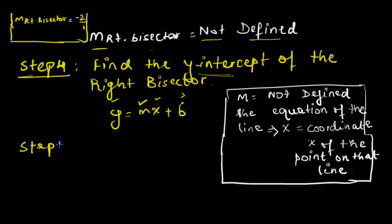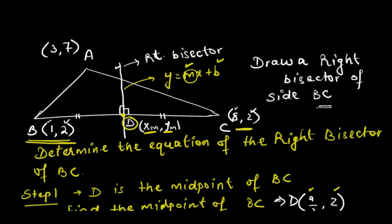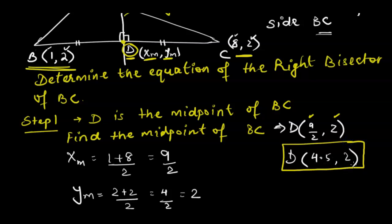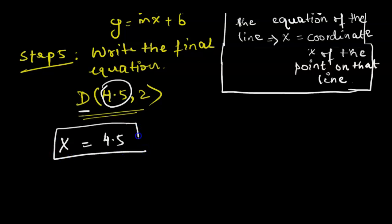We proceed to Step 5 to write the final equation of the right bisector. Since the slope is undefined and point D lies on the right bisector with coordinates (4.5, 2), the final equation is x = 4.5. This is our final answer for the equation of the right bisector.